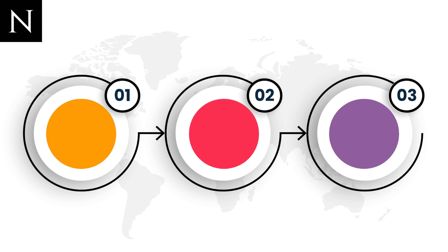To detect and counter proliferation financing risk, it is important to understand its three stages. One: fundraising, which may include contributions from the state, profits from commercial enterprises, or any criminal proceeds. Two: disguising the funds — moving the collected funds through a complex network or using shell companies to hide the source and intended purpose.